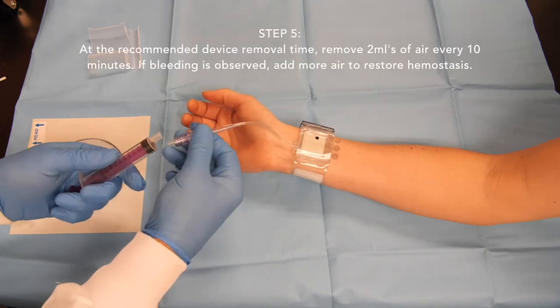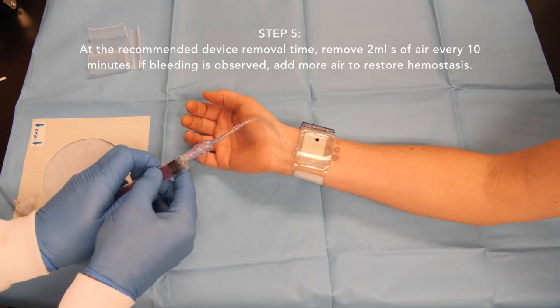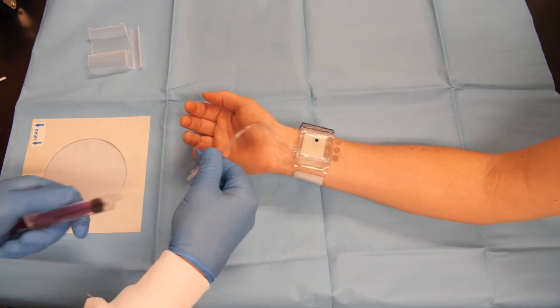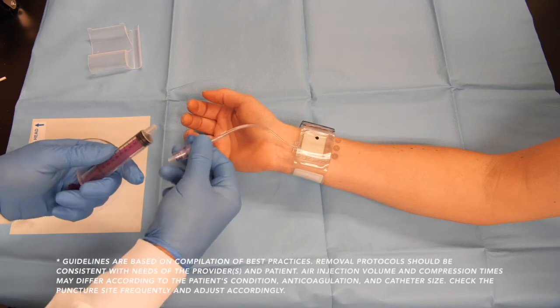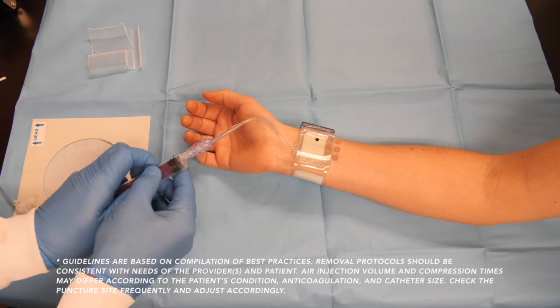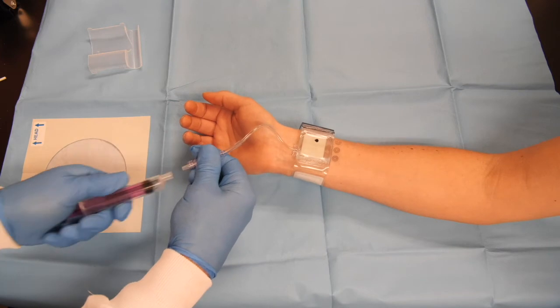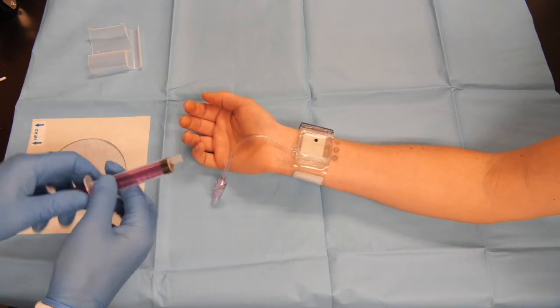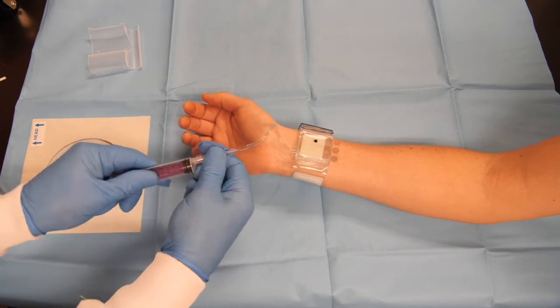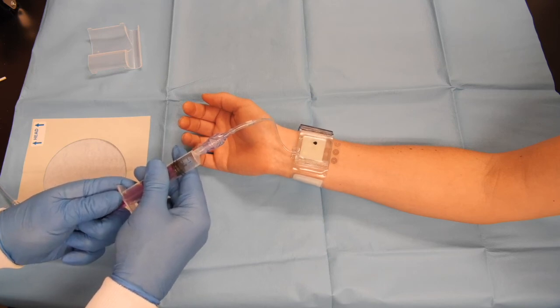At the targeted device removal time, use the air syringe to gradually remove air from the balloon in 2 ml volume removal steps. If bleeding is observed, stop the volume removal and add back 2 ml of air volume in a stepwise fashion into the balloon to restore hemostasis.